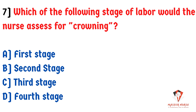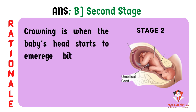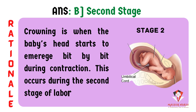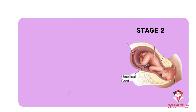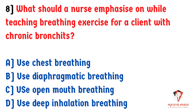Which stage of labor would the nurse assess for crowning? A) First stage, B) Second stage, C) Third stage, D) Fourth stage. The answer is B, second stage. During the second stage, when contractions begin, the baby's head starts to enter the cervix and emerges bit by bit with each contraction, becoming visible — this is called crowning.